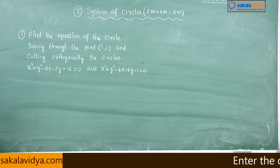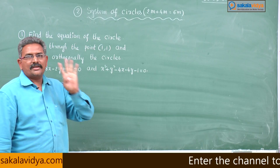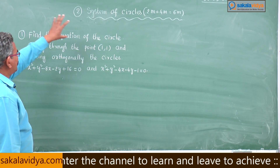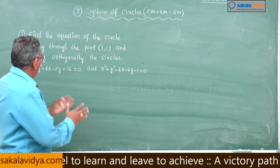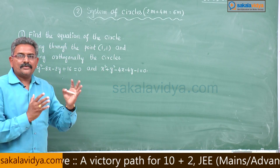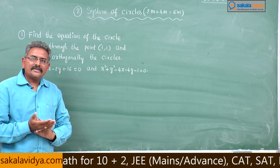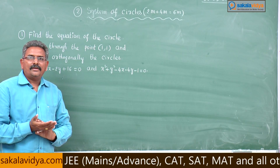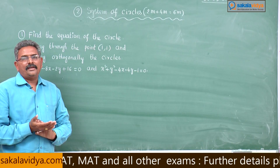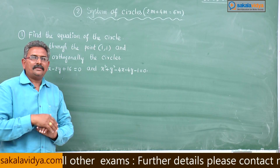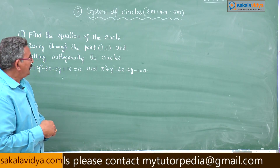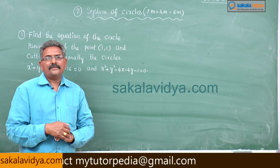This is a very important problem for 4 marks in the examination. We have to find the equation of the circle passing through the point 1 comma 1 and orthogonal to the 2 circles. First of all, let us suppose the equation of the required circle S = 0, that is x² + y² + 2gx + 2fy + c = 0. Since it passes through 1 comma 1, putting x = 1, y = 1 we get a linear equation in g, f, c — three variables.